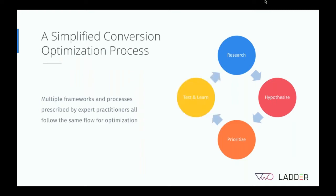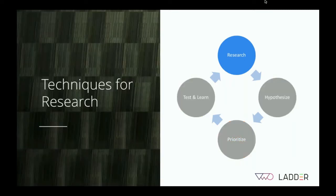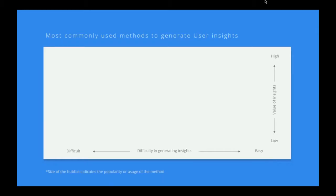Once you hypothesize, you start prioritizing the ideas you want to test and make best use of your time. And finally, you actually test and learn from individual experiments you run — winner or a failure, it doesn't matter. Given this simplified optimization process, today I'll be covering techniques to do quality research, how to hypothesize, and how to prioritize. Then Missy from Ladder will cover what metrics to optimize, funnel analysis, and how to learn from individual tests.